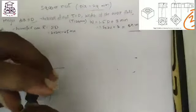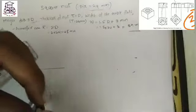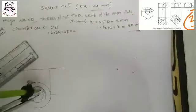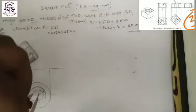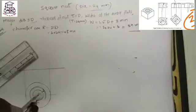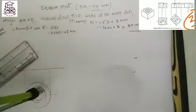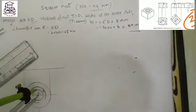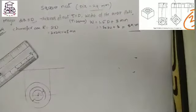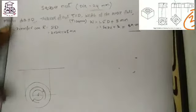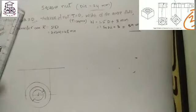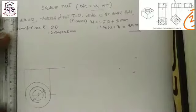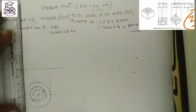Draw another circle inside with a radius of 10 mm and a diameter of 20 mm. The dimension of the inside circle is diameter minus 2 mm, so 24 minus 2 equals 22 mm — take radius 10 mm and complete that circle.